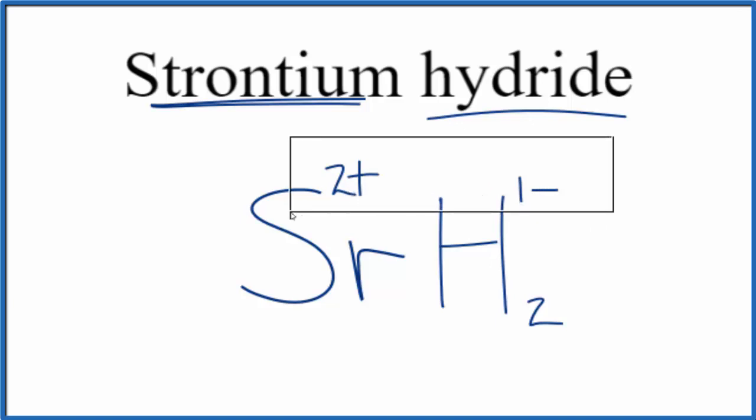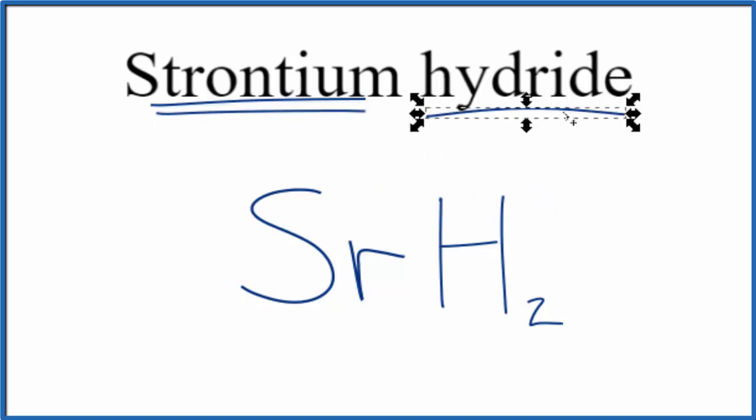So the formula for strontium hydride is SrH2. So remember, when you have hydride written in the formula and it's bonded to a metal, that'll usually have this 1 minus charge, that'll let you write the formula for something like strontium hydride.